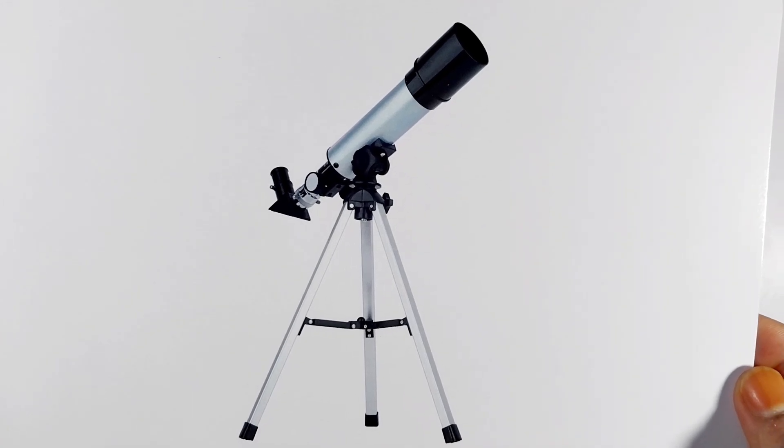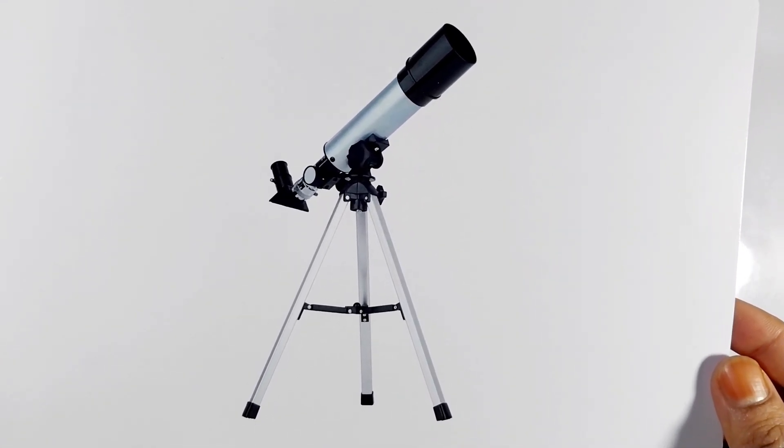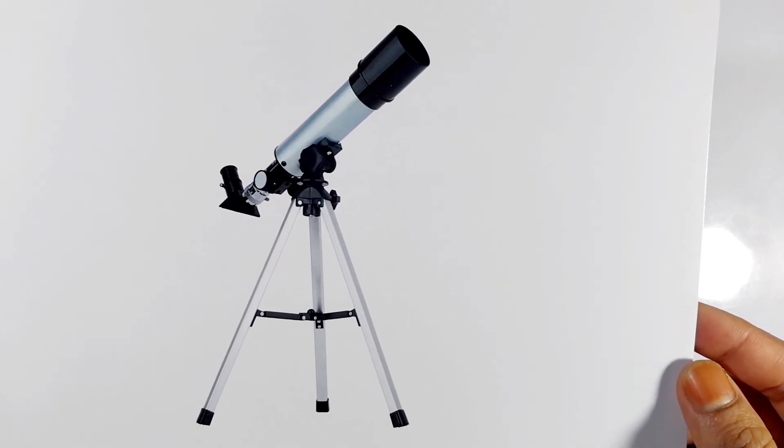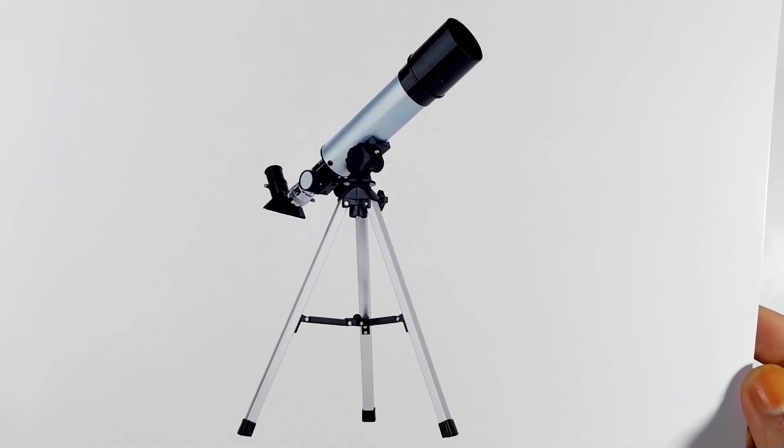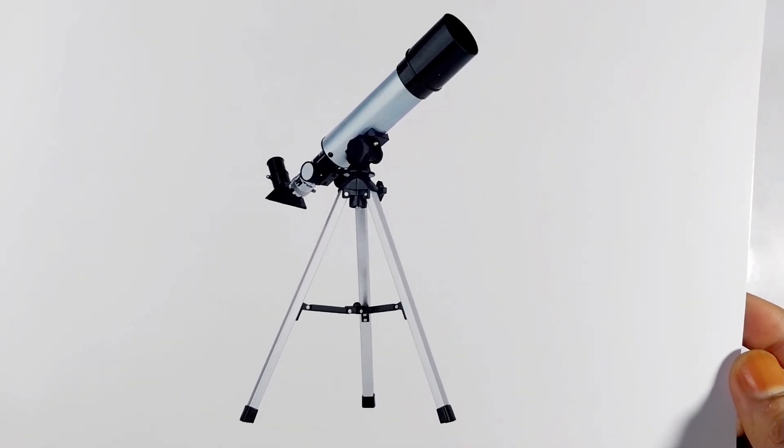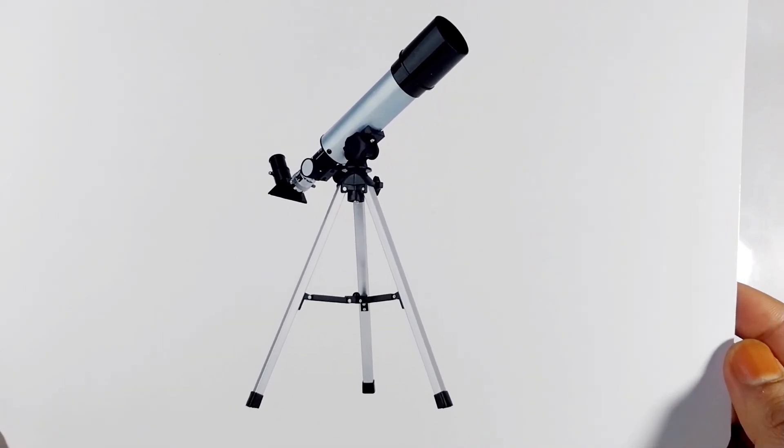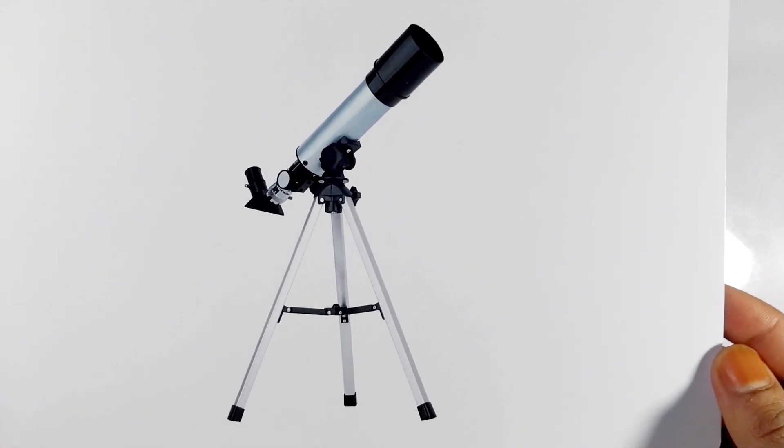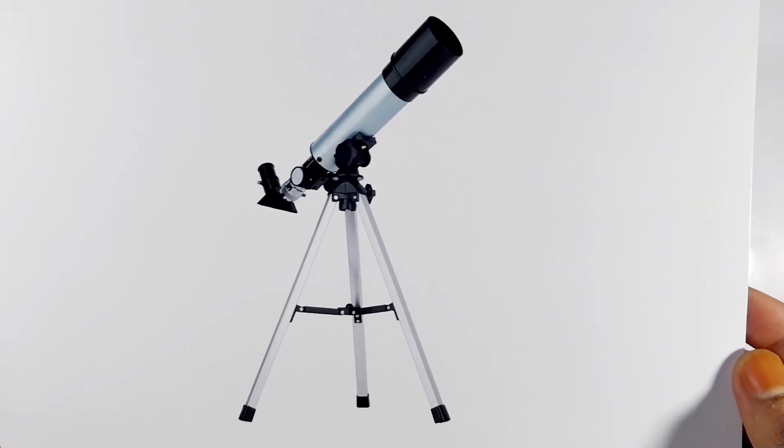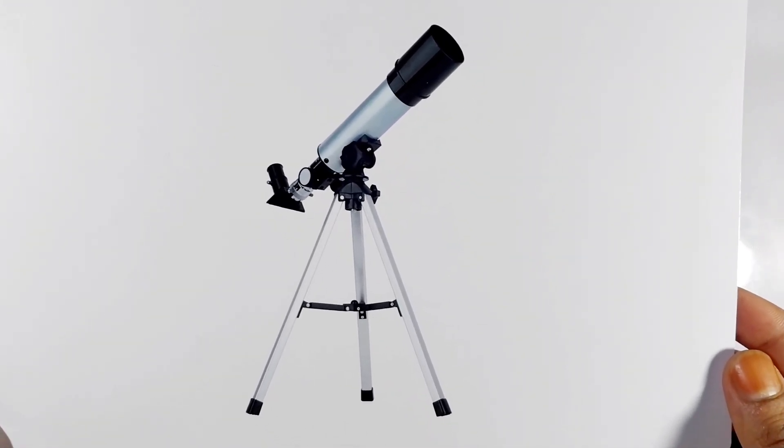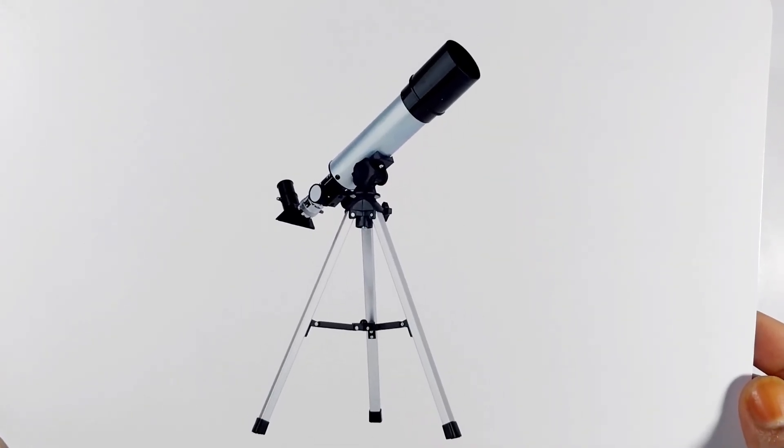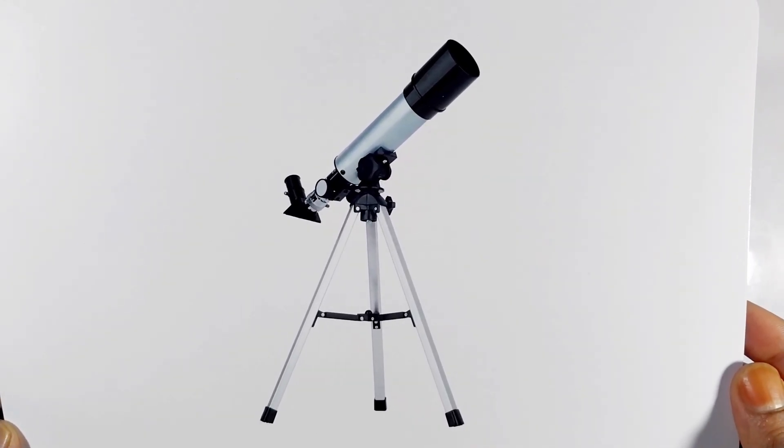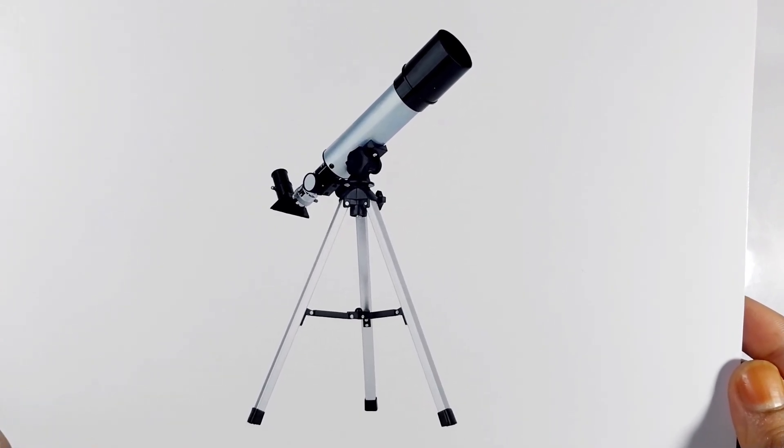A telescope is a device used to observe distant objects in space, like stars, planets, and galaxies. It magnifies light, making far away objects appear closer and clearer. Telescopes come in different types, such as refracting telescopes that use lenses and reflecting telescopes that use mirrors.